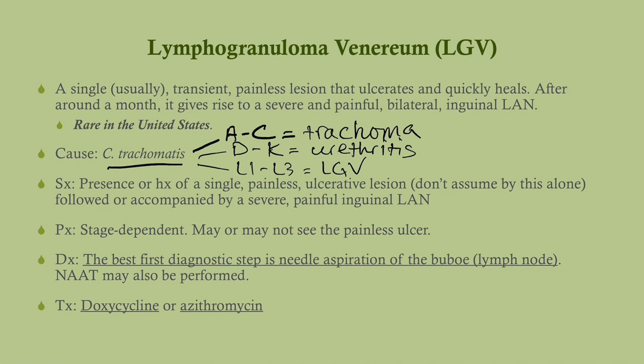Symptoms were already discussed. Physical exam is stage dependent — you may or may not see the painless ulcer or lymphadenopathy. The best initial step is needle aspiration of the bubo, which is the affected lymph node. If that is not present, you can get NAAT. The treatment is doxycycline or azithromycin — azithromycin if dealing with a pregnant patient; otherwise doxycycline is preferred.